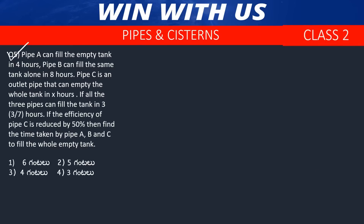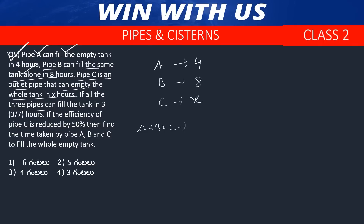Question number 5. Pipe A can fill an empty tank in 4 hours. Pipe B fills the same tank in 8 hours. Pipe C is an outlet pipe that empties the whole tank in X hours. If all 3 pipes together fill the tank in 3 and 3/7 hours (i.e., 24/7 hours), find X. Then, if the efficiency of pipe C is reduced by 50%, find the new time to fill the tank.